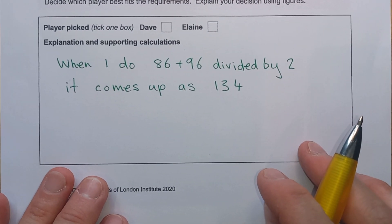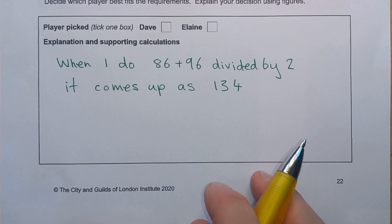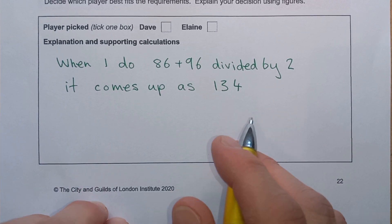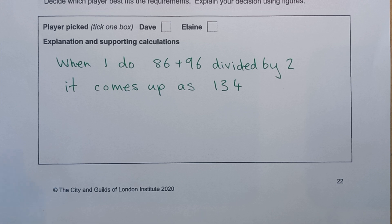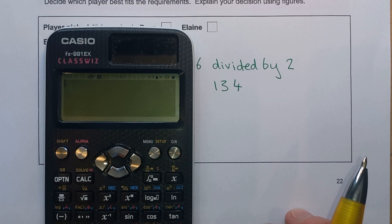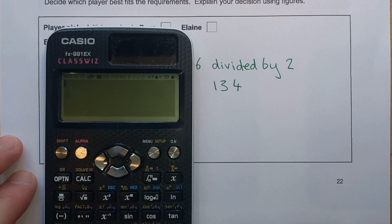Now the problem we're getting here will only occur if two things are happening. The first is that you're using a scientific calculator like this one here, and the other problem is that you forget how to apply your BIDMAS rules.